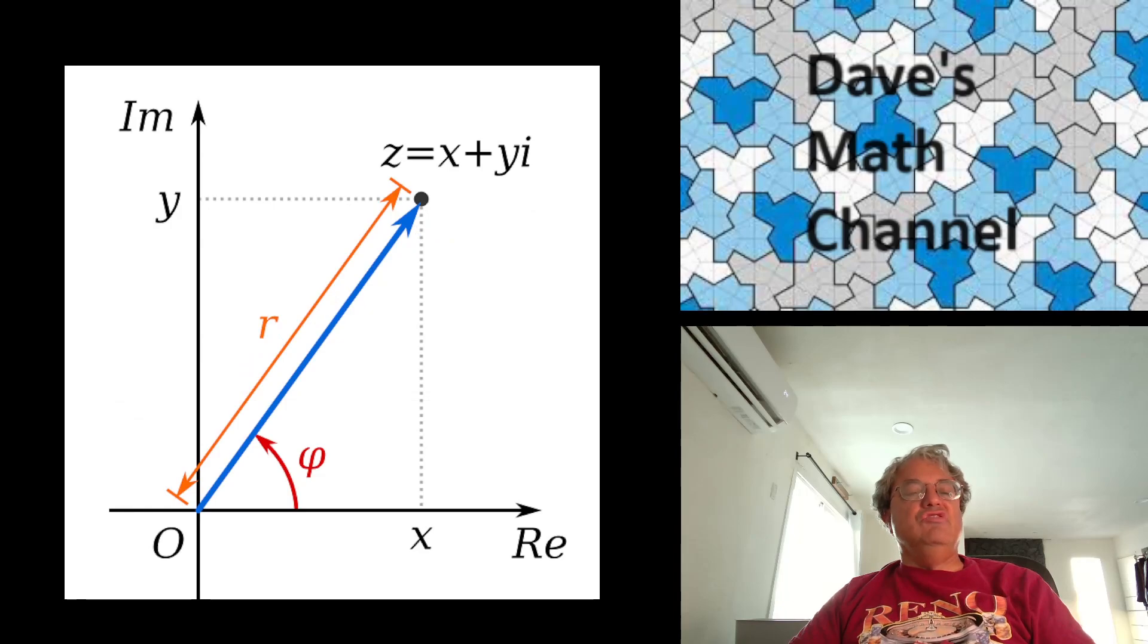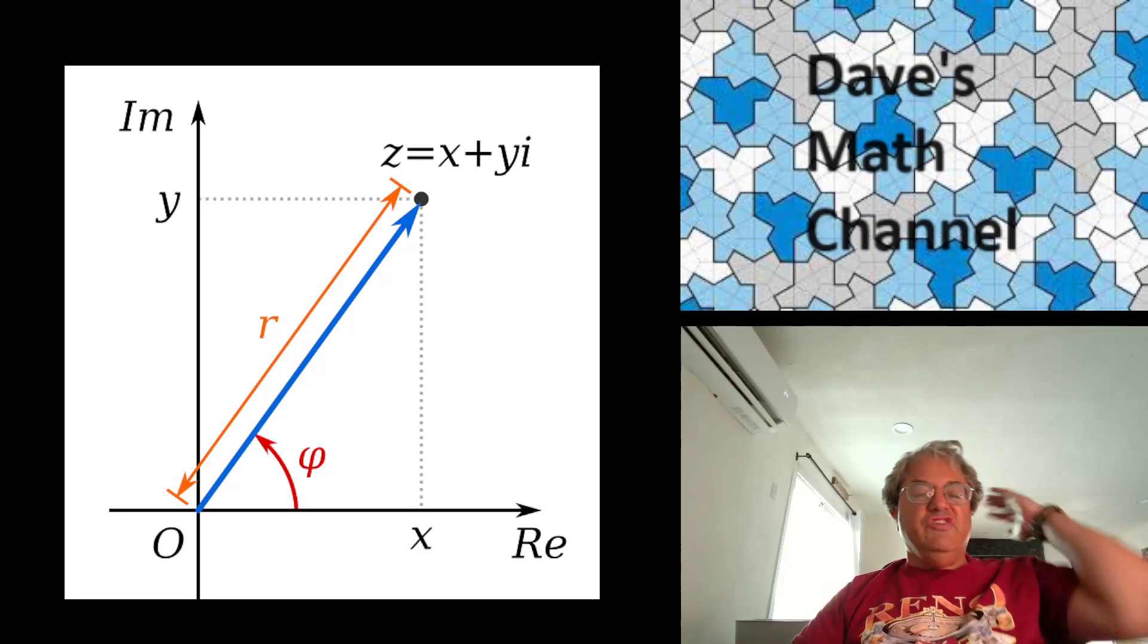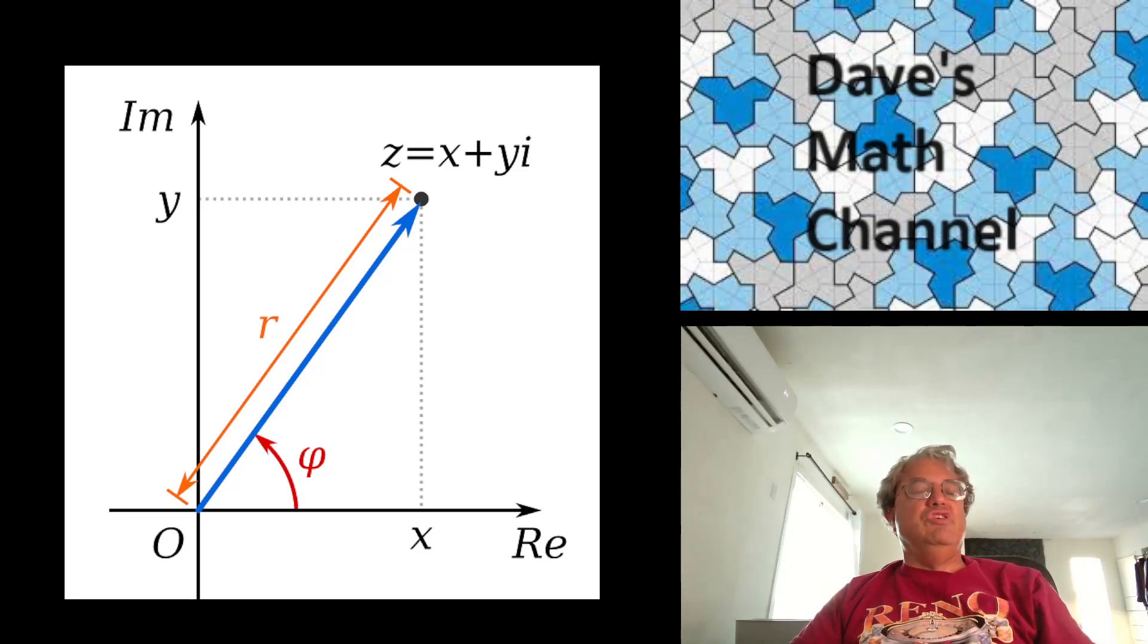And you can do a lot with these things. And there's another important representation of complex numbers. The representation I just gave you is known as the Cartesian or rectangular representation. But just like vectors, there's two ways you can represent two-dimensional vectors. You can either represent them in rectangular coordinates or in polar coordinates. So you can talk about the length or the norm of this complex number, also known as the absolute value. We use the letter R for that. The equation is R equals the square root of x squared plus y squared. That's just the Pythagorean theorem.